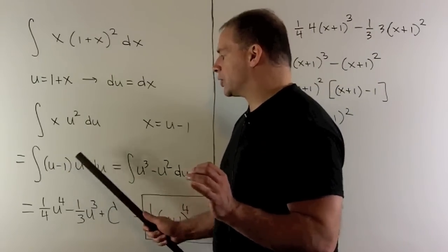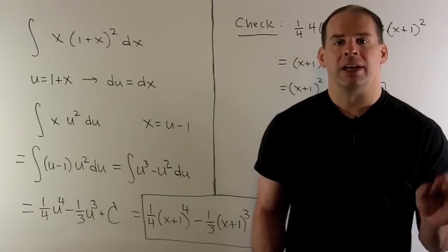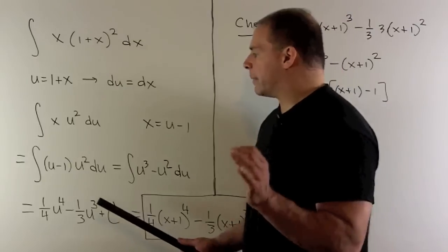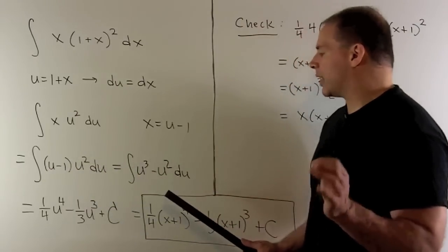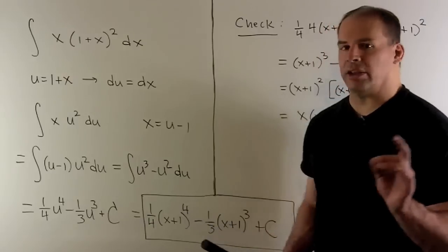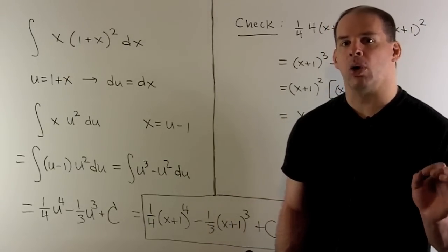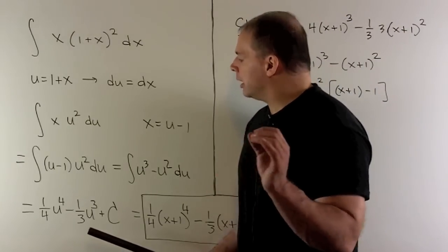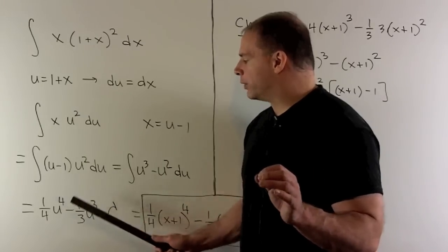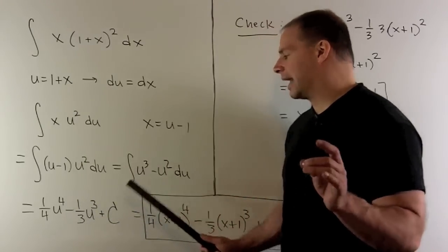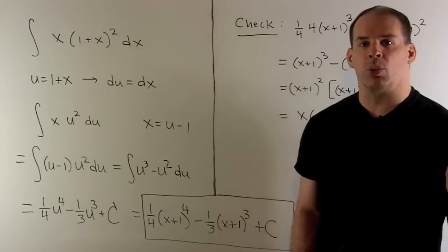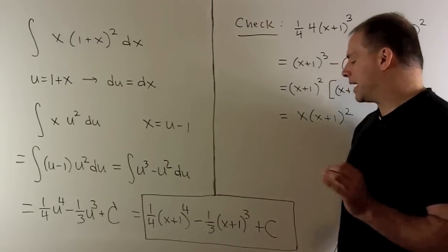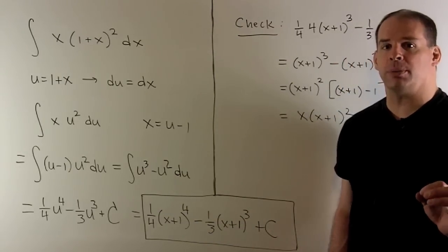We're also going to substitute x equals u minus 1 into the integrand. So we have the indefinite integral of u minus 1 times u squared du — everything's in terms of u, so we can go about our business as usual. Multiplying through gives the indefinite integral of u cubed minus u squared du. Applying the power rule — add 1 to the exponent, flip over — gives 1 fourth u to the fourth minus 1 third u cubed, plus a constant. Substituting x plus 1 back in for u, our answer is 1 fourth times x plus 1 to the fourth minus 1 third times x plus 1 cubed, plus a constant.